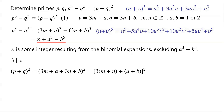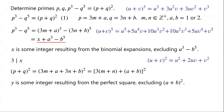p plus q all squared equals 3m plus a plus 3n plus b all squared, which can be written as 3 times m plus n plus a plus b all squared. By expanding, note that all terms include a factor of 3 except a plus b all squared. We let y be some integer from the perfect square expansion excluding a plus b all squared, so p plus q all squared equals y plus a plus b all squared. Clearly, 3 divides y.